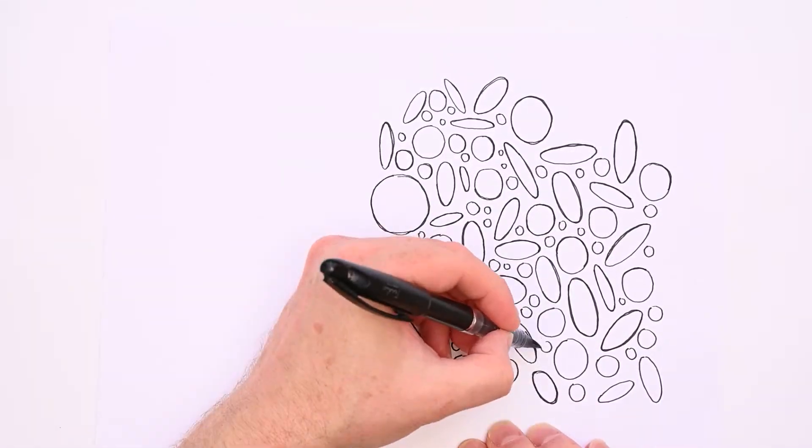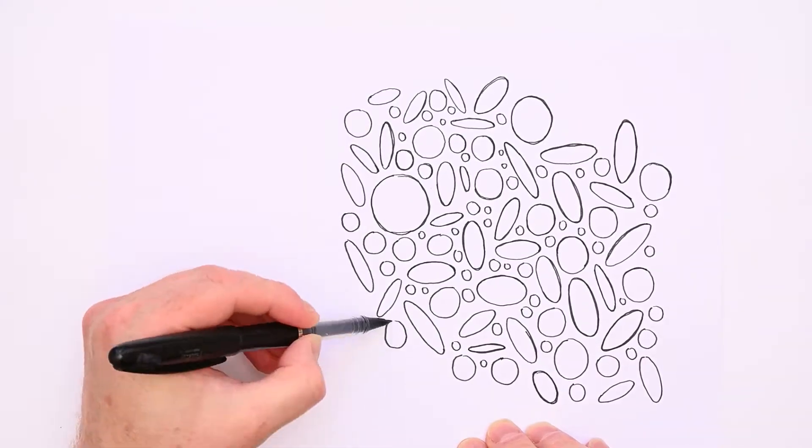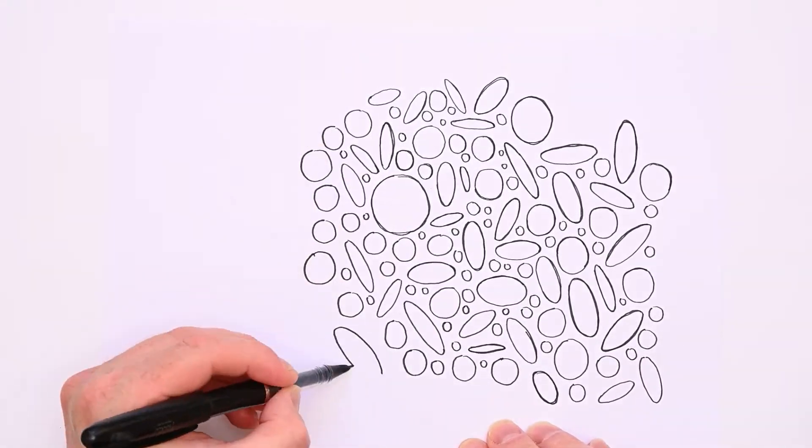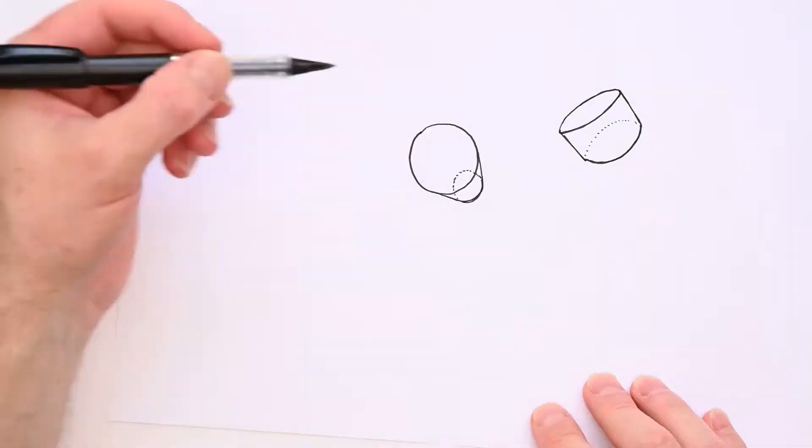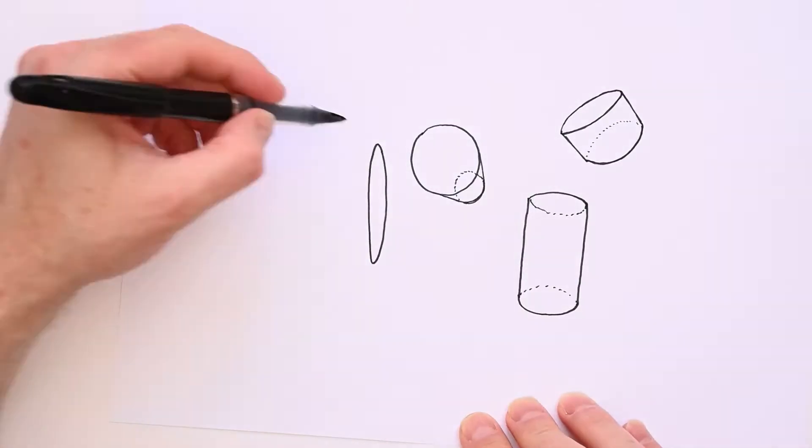This is a great exercise because it trains your muscle memory to draw these ellipses. It is a useful skill because you can often break things down into simpler primitive shapes like cylinders and cones, and you need to be able to draw ellipses to draw them well.